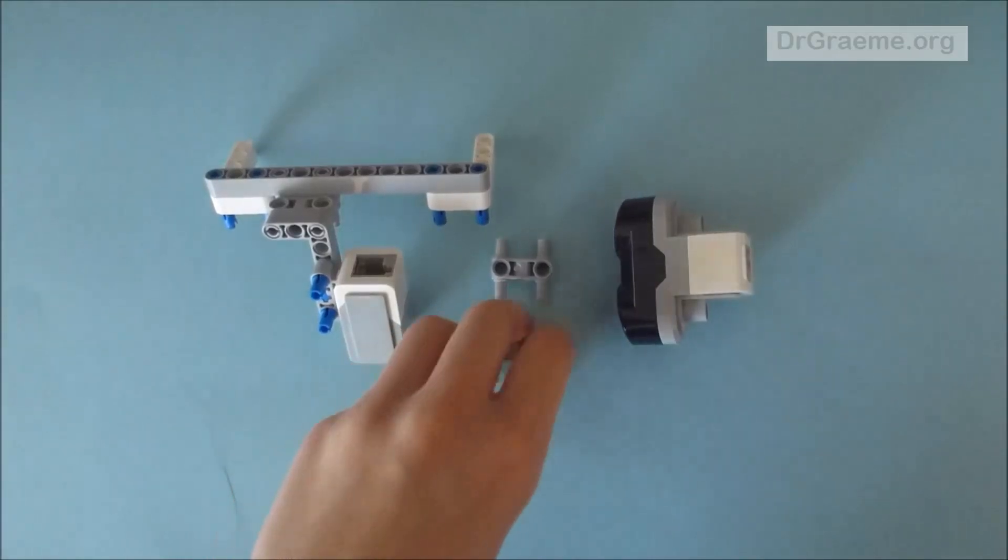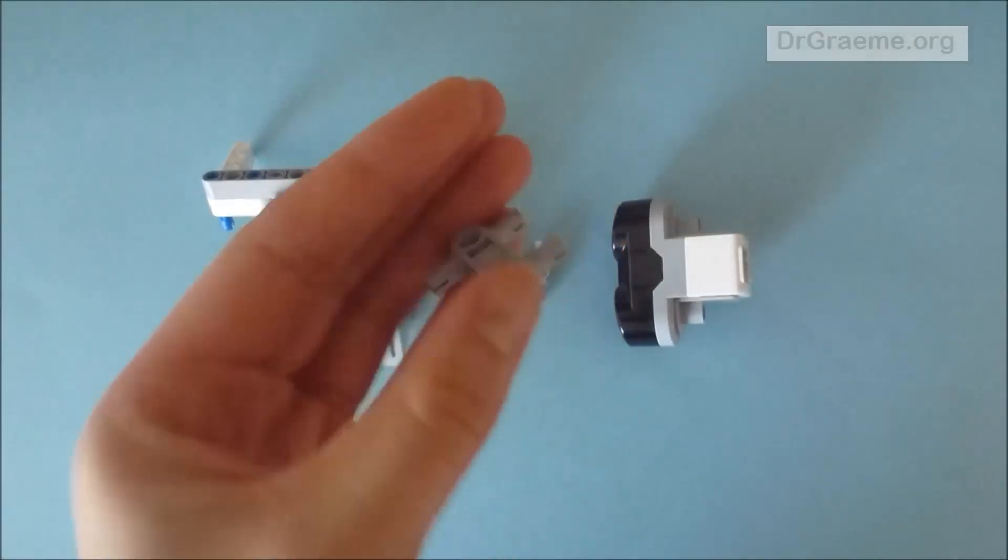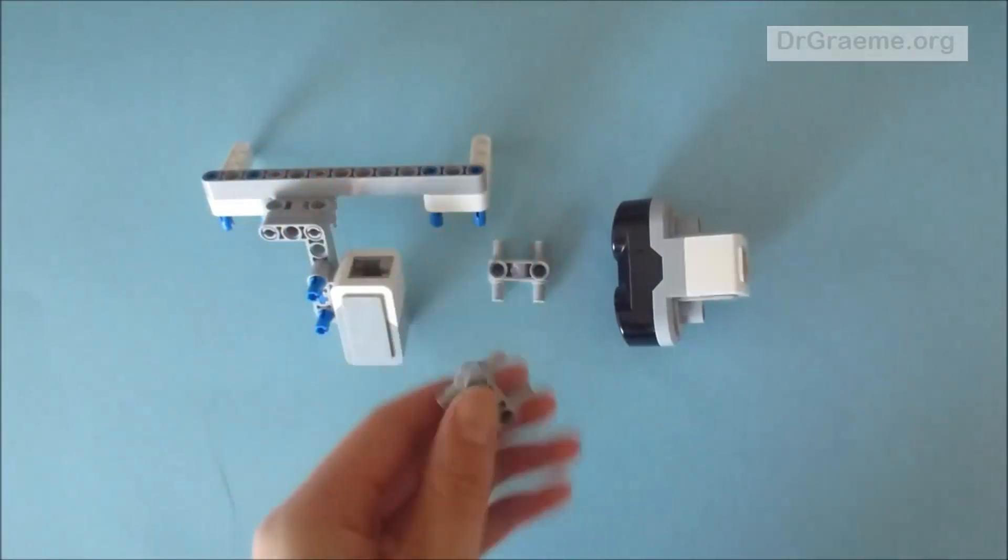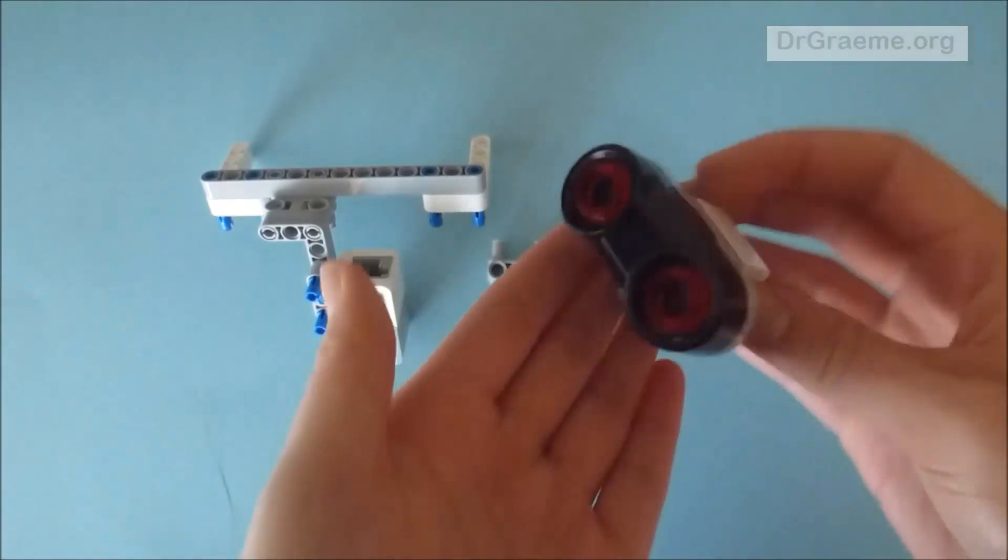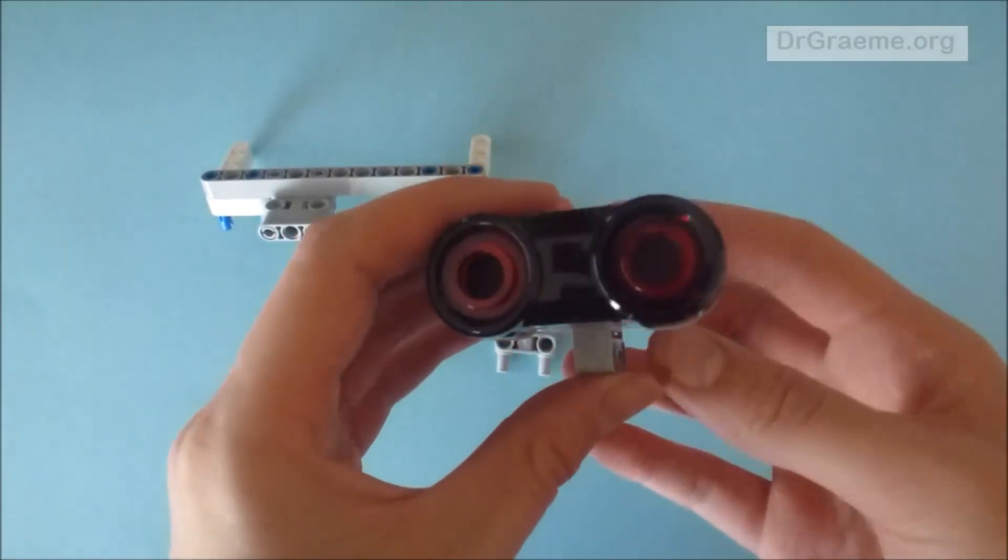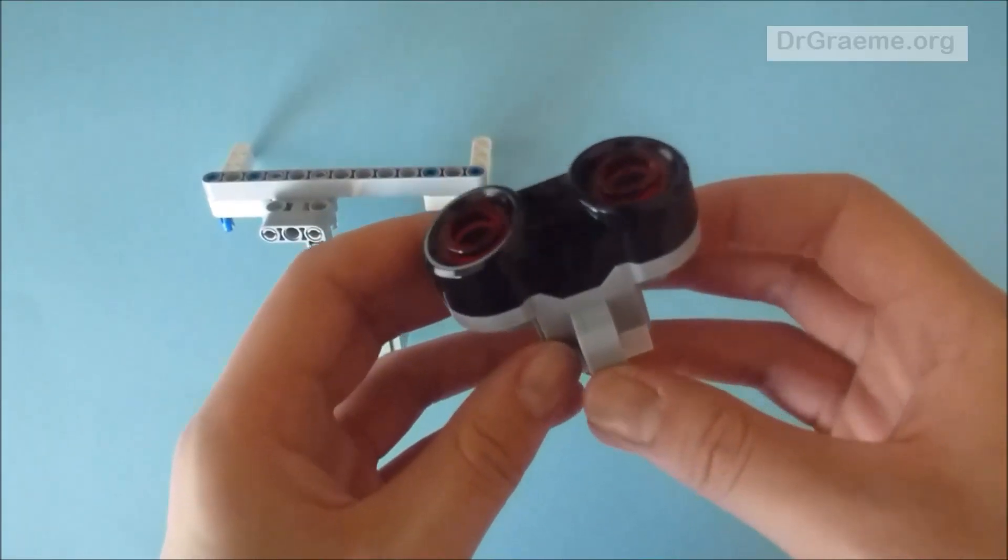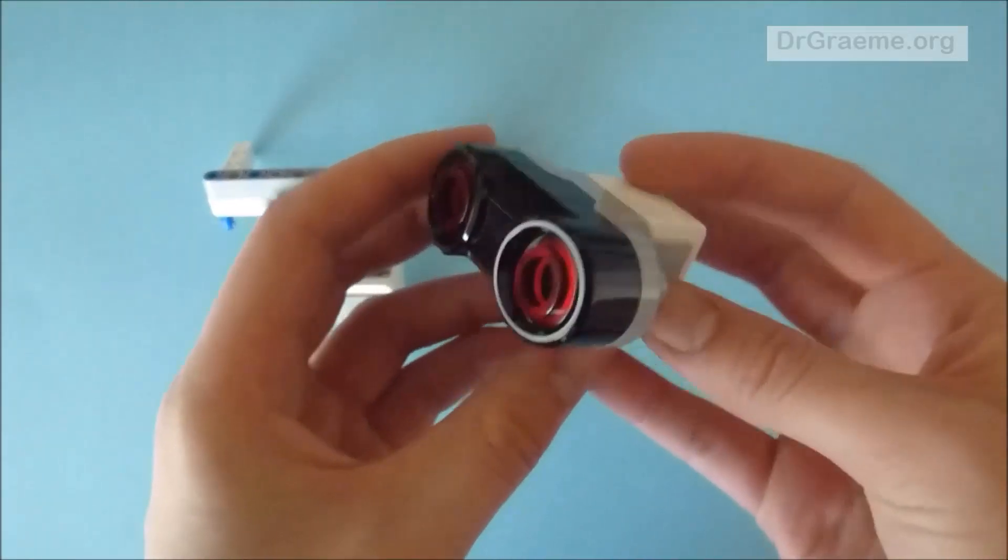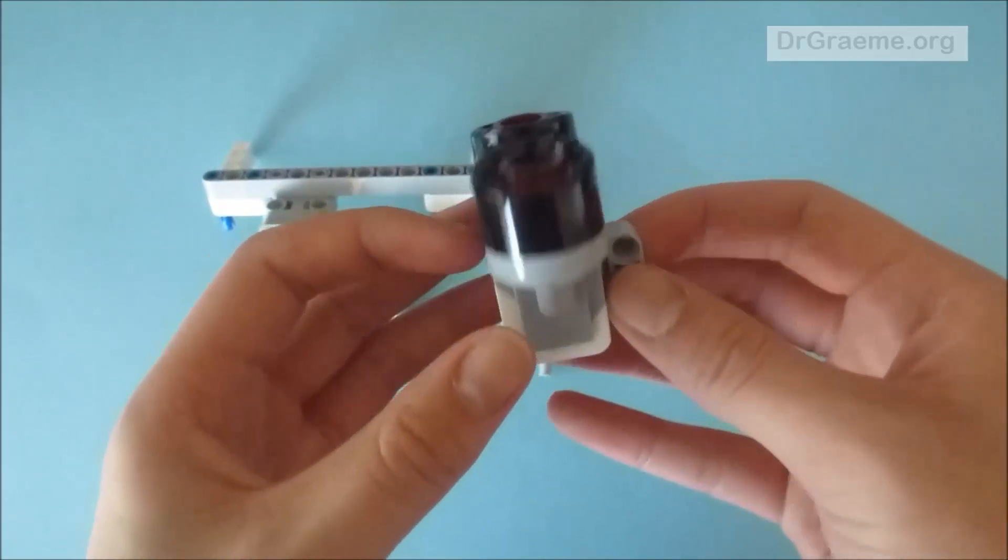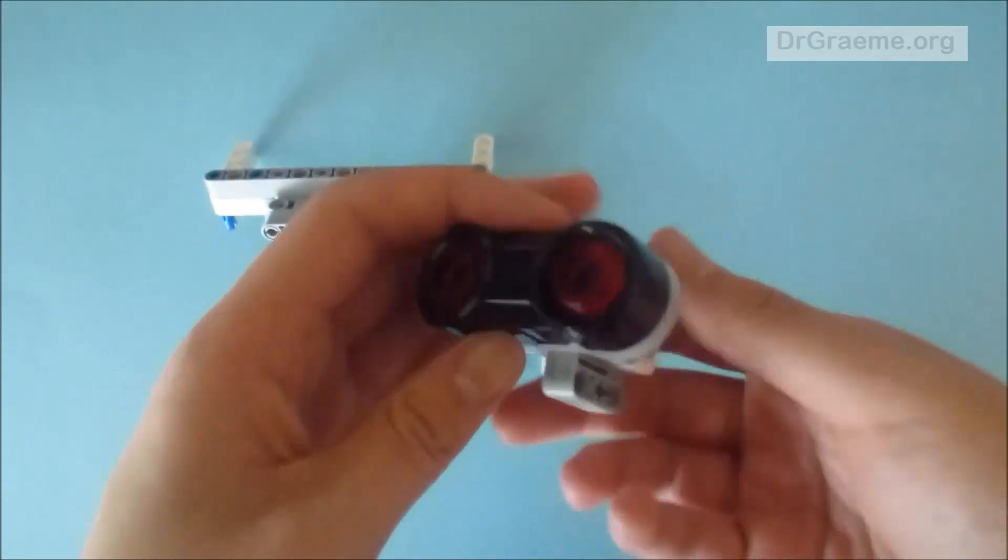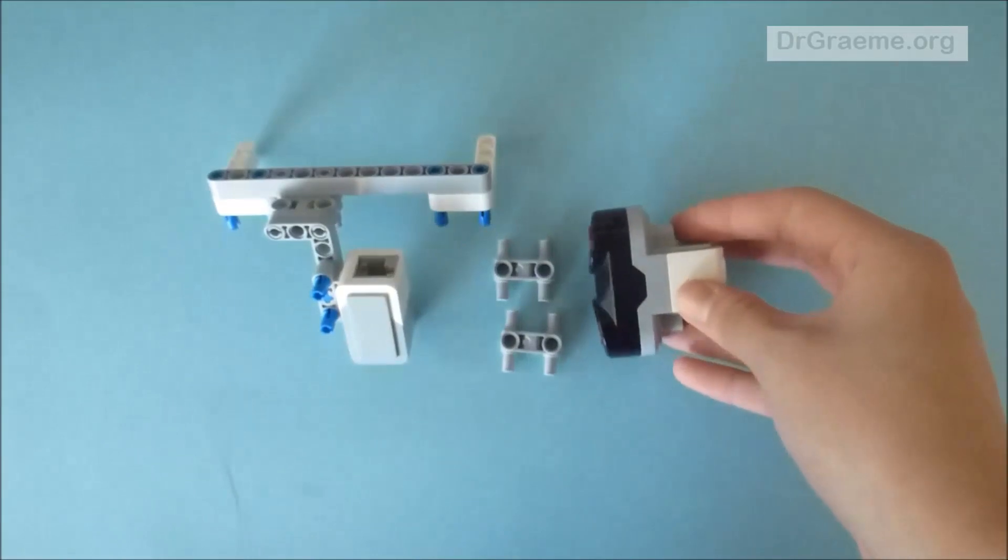For this part we will need two H pieces and one ultrasonic sensor. Now notice this looks a bit like the head of Wall-E, so it's very cute. It's very difficult to mistake this for any other sensor.